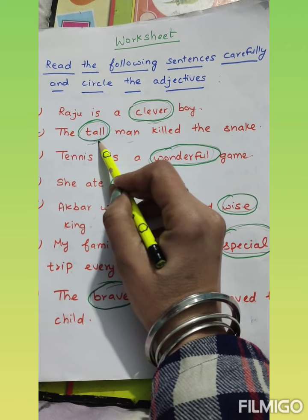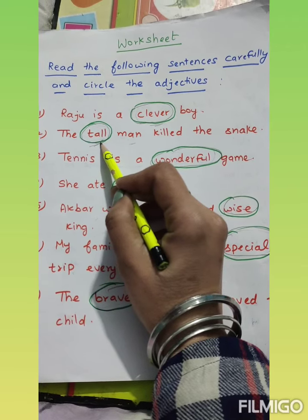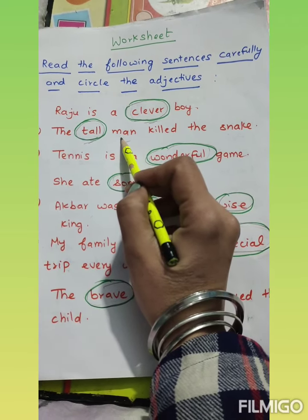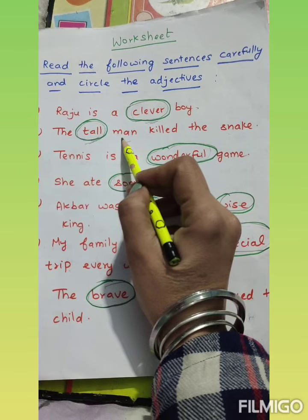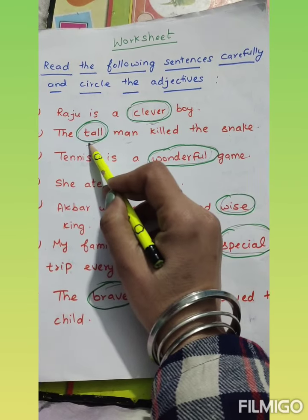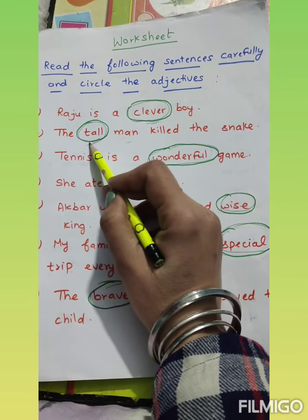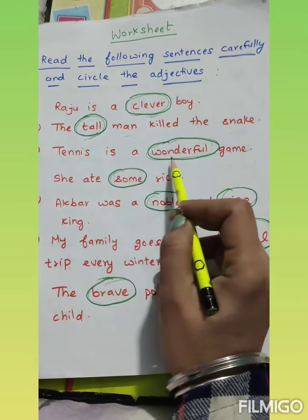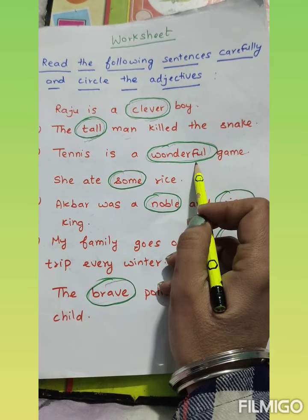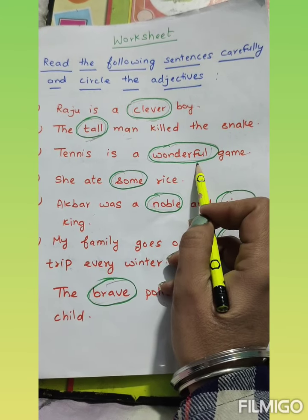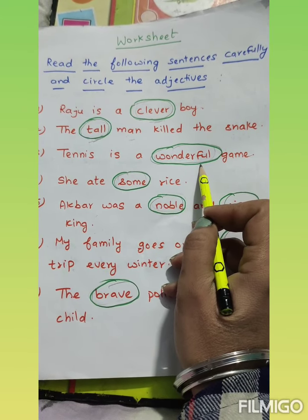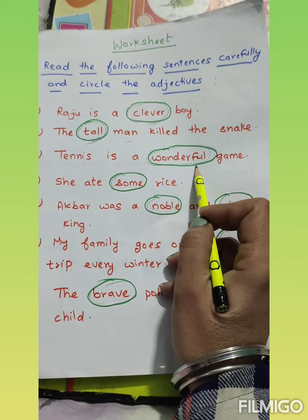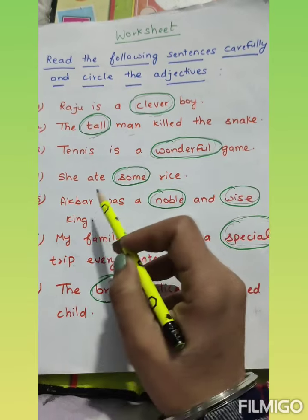Adjective kya hota hai? 'Tall' word kis ke liye aaya? Man ke baare mein, man ki visheshita bata aaya — ki woh kaisa hai, tall hai. To tall kya hai? Adjective. Tennis is a wonderful game — tennis kaisa hai? Wonderful game. To wonderful kya hai? Adjective.